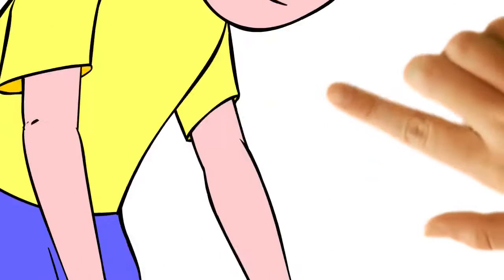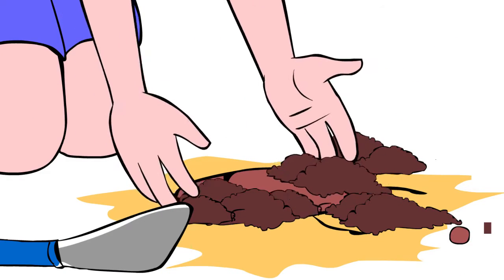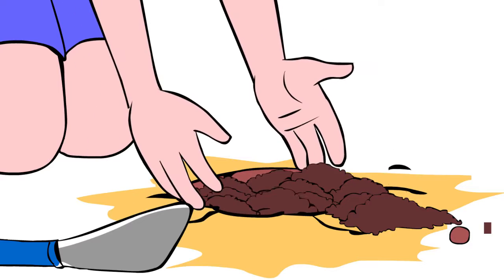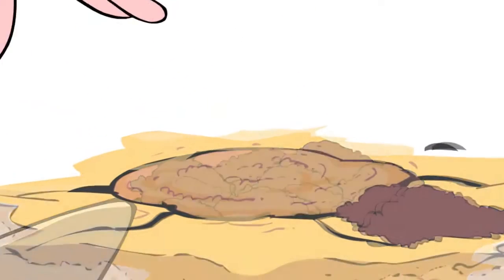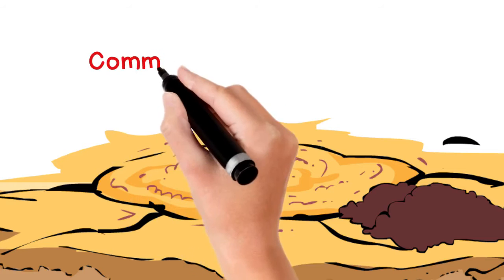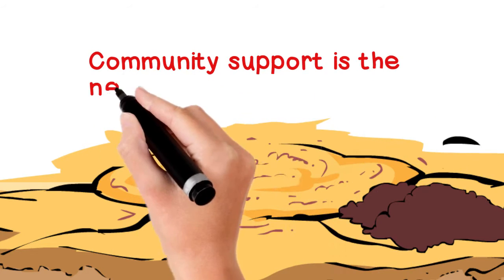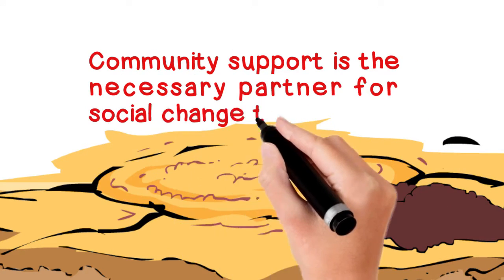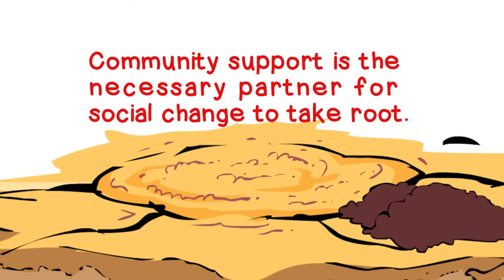Planting in community support is the beginning. As a seed needs soil, social change requires a nurturing base. Community support is the necessary partner for social change to take root.